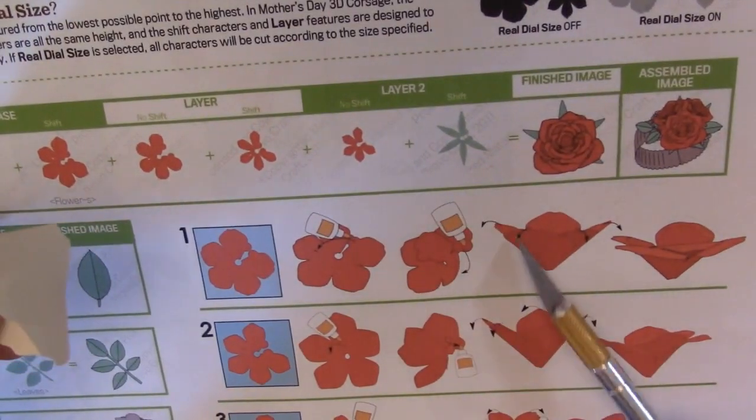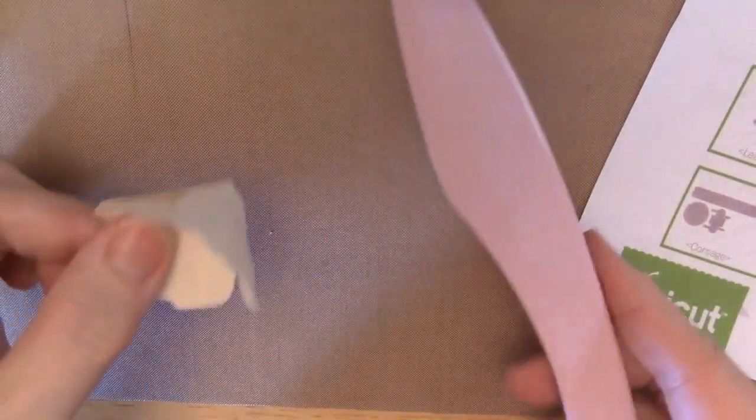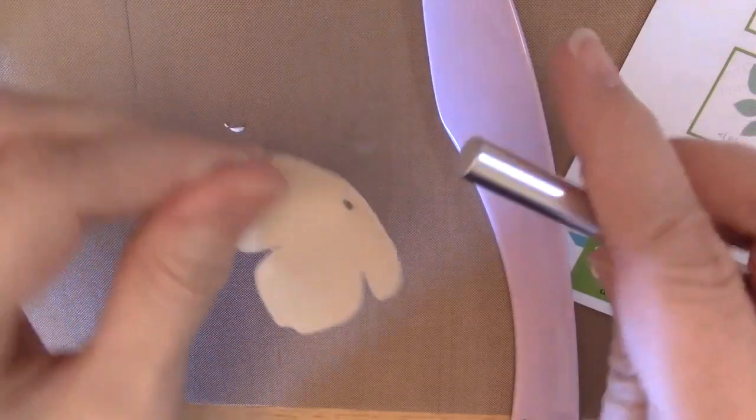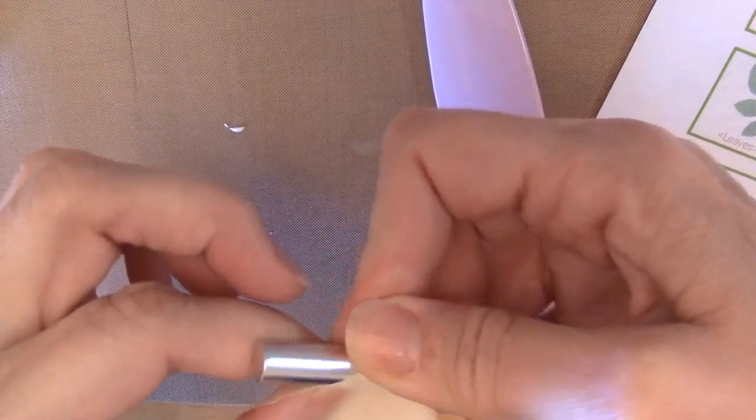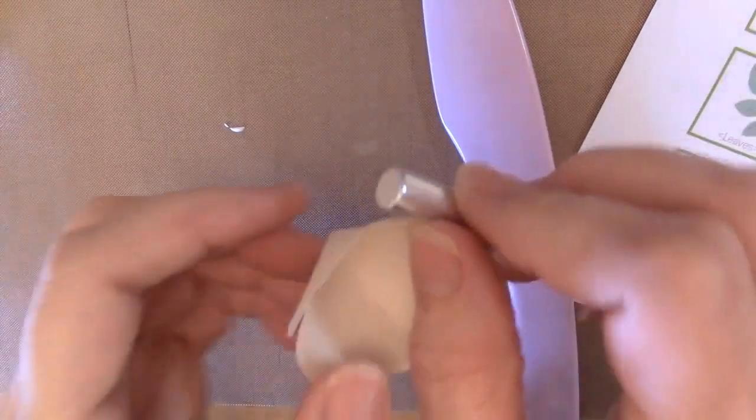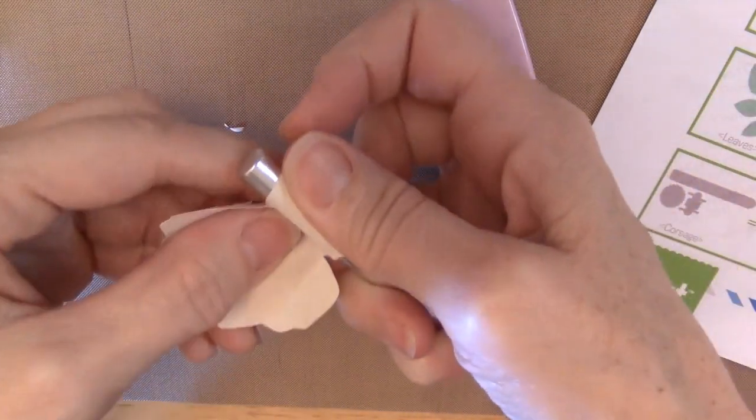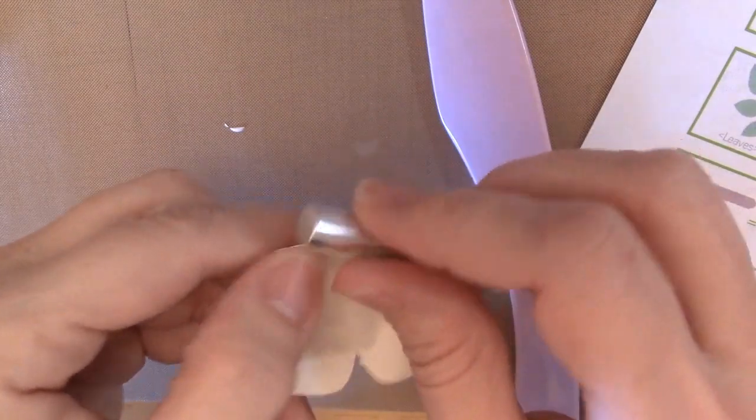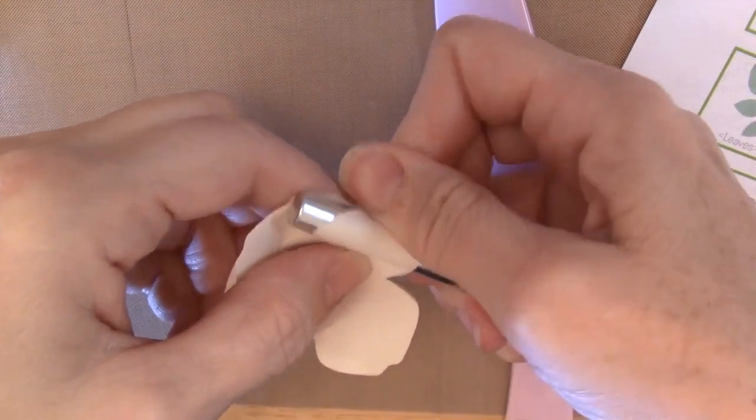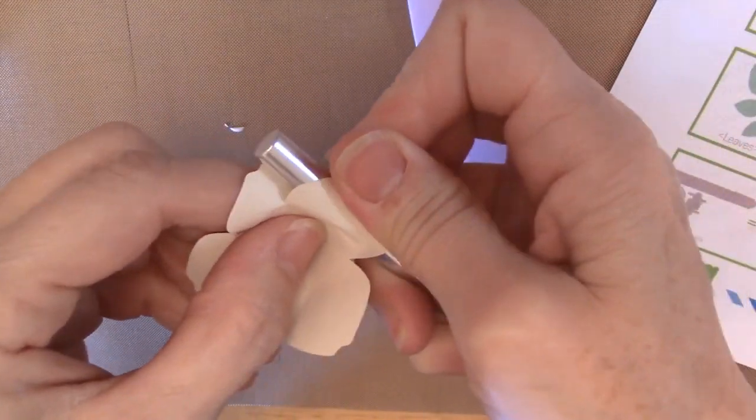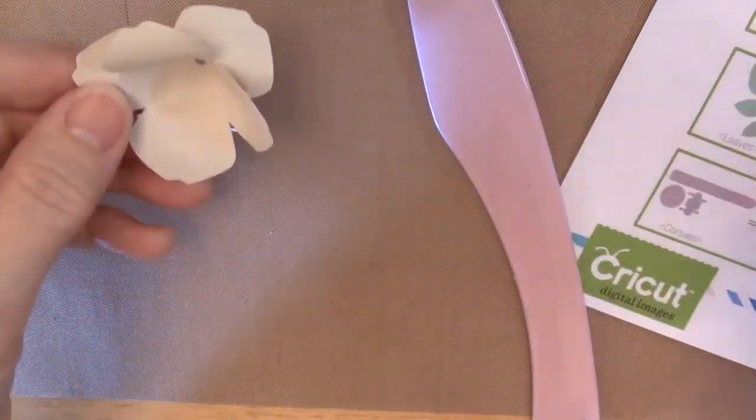And then it shows to fold the petals back and then this piece is done. So you can take a bone folder or something round. I was using the end of my craft knife, just be careful you don't cut yourself. So just fold it around so that the petals are going out.